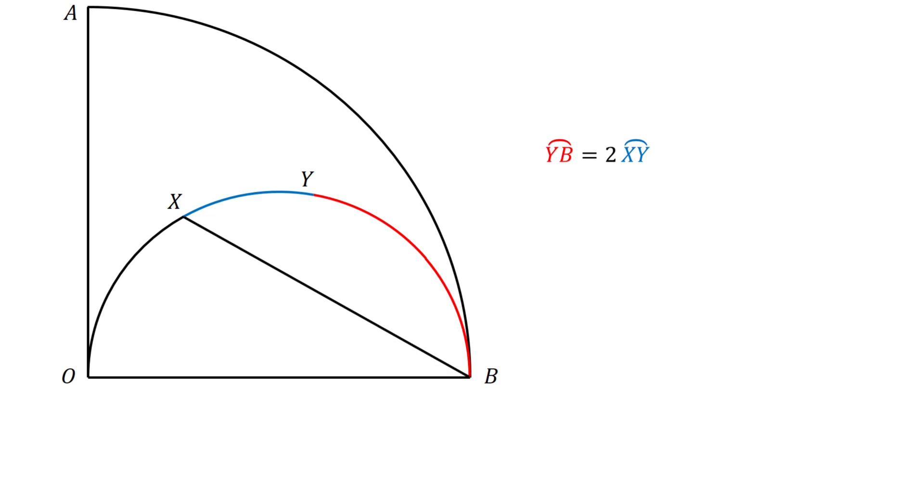Next, connect B to X and connect O to Y and let the intersection of BX and OY be D. Extend OY to meet the quarter circle at C. Given that DY equals 6 units, our goal is to find the length of CY.